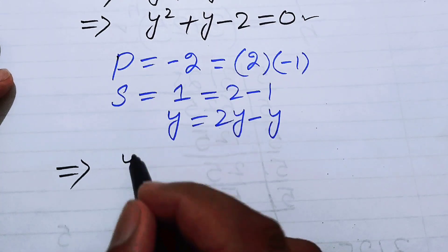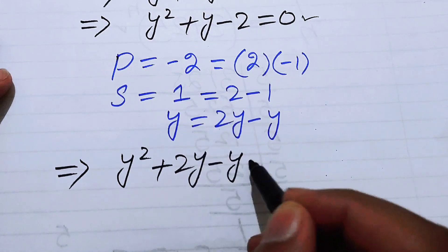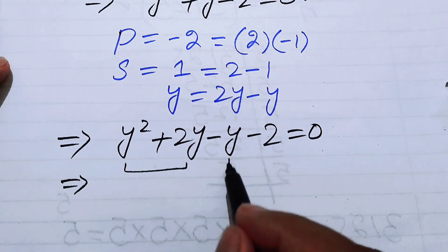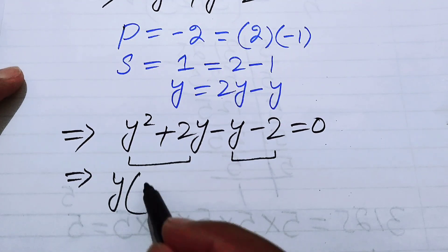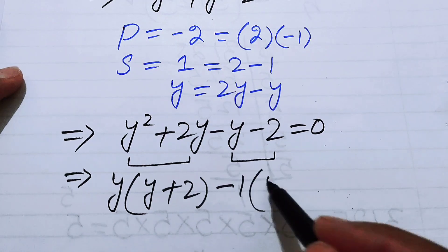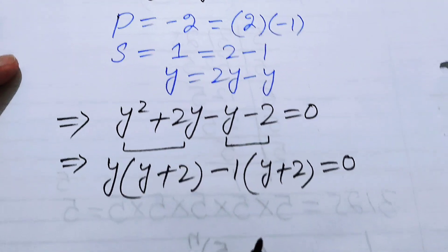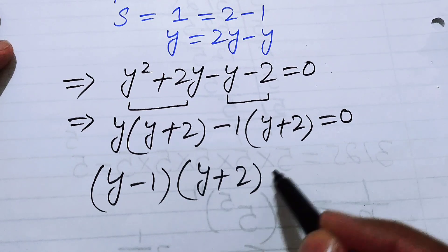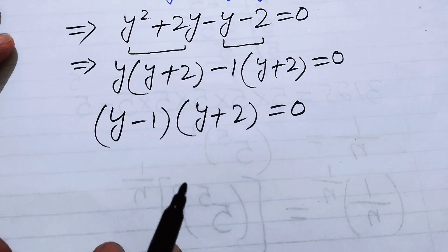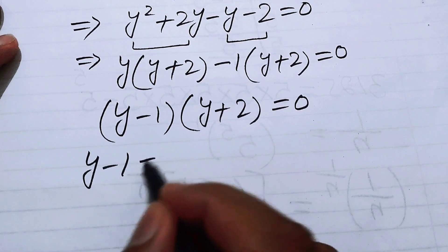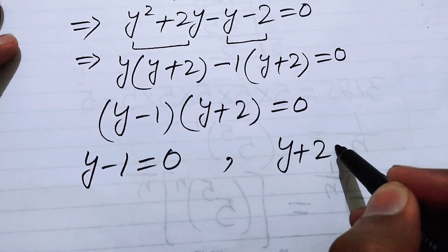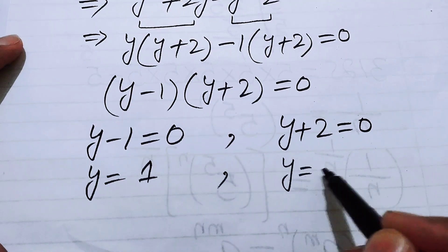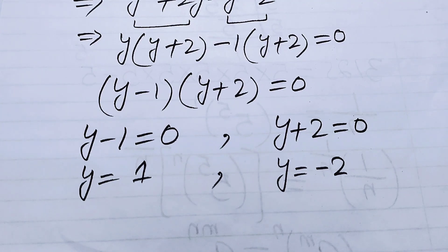The expression becomes y squared plus 2y minus y minus 2 equals 0. Taking y common from the first two terms and minus 1 from the last two, we get y times (y plus 2) minus 1 times (y plus 2) equals 0. Factoring out (y plus 2) gives (y minus 1)(y plus 2) equals 0, so y equals 1 or y equals minus 2.